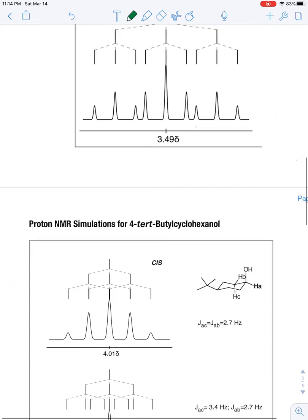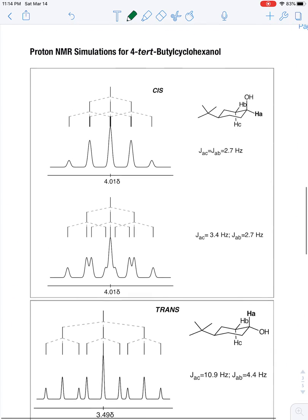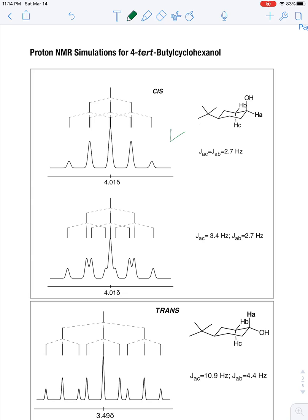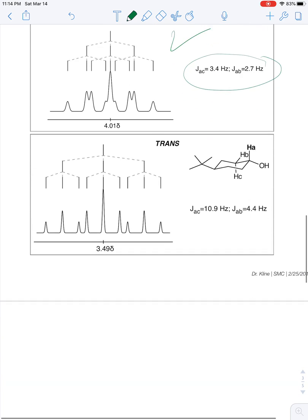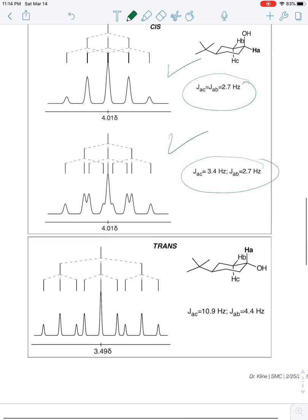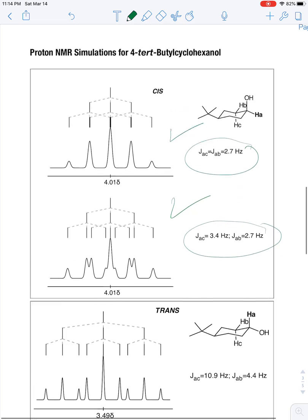The full handout looks like this. It shows the cis product, and you can actually see the coupling constant values that I used. Then it also shows the trans product, and we're going to deal with the trans product next.